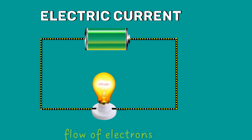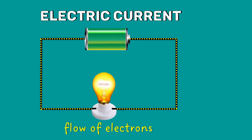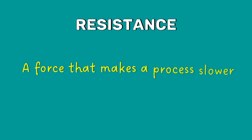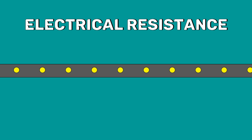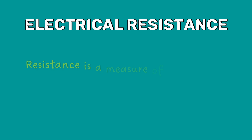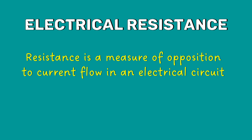Electric current is the flow of electrons. When we talk about electrical circuits, one frequently used term other than voltage and current is resistance. The word resistance means a force that makes a process slower. Electrical resistance also means the same thing — it reduces the number of electrons moving down the conductor. In other words, resistance is a measure of opposition to current flow in an electrical circuit.